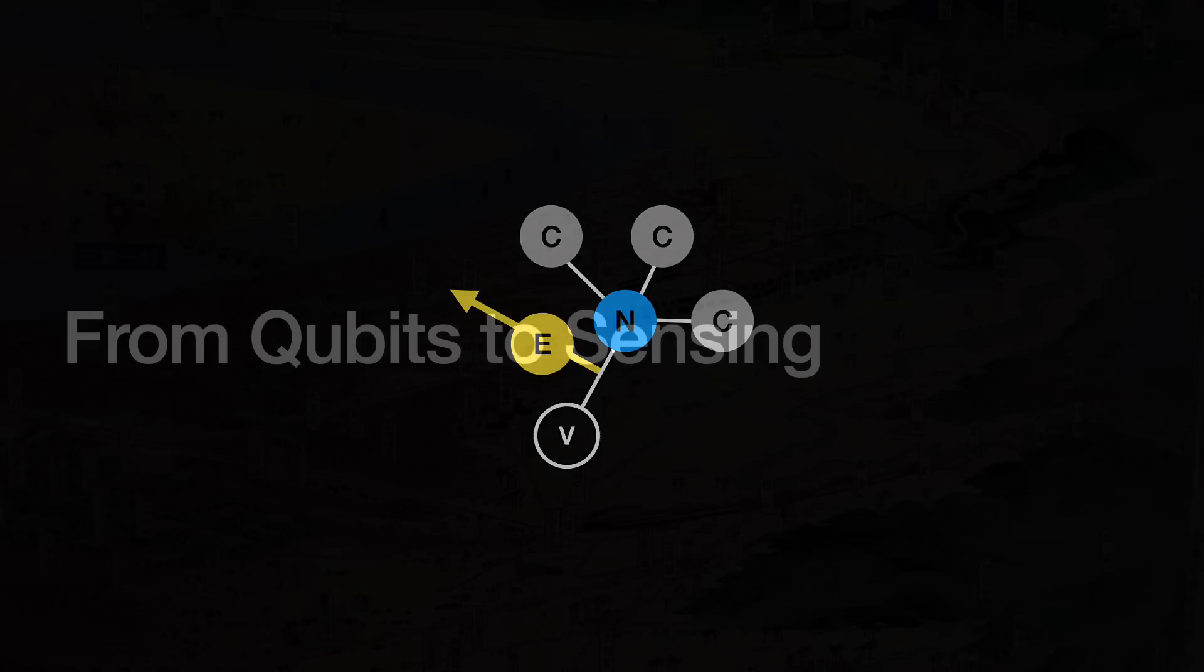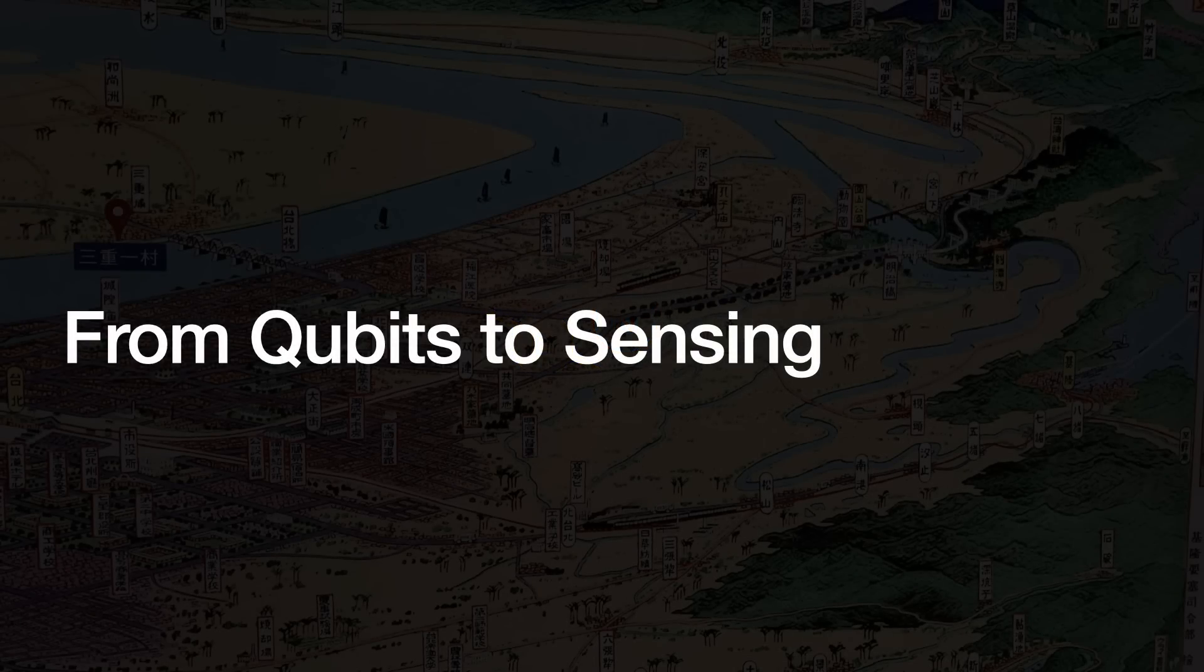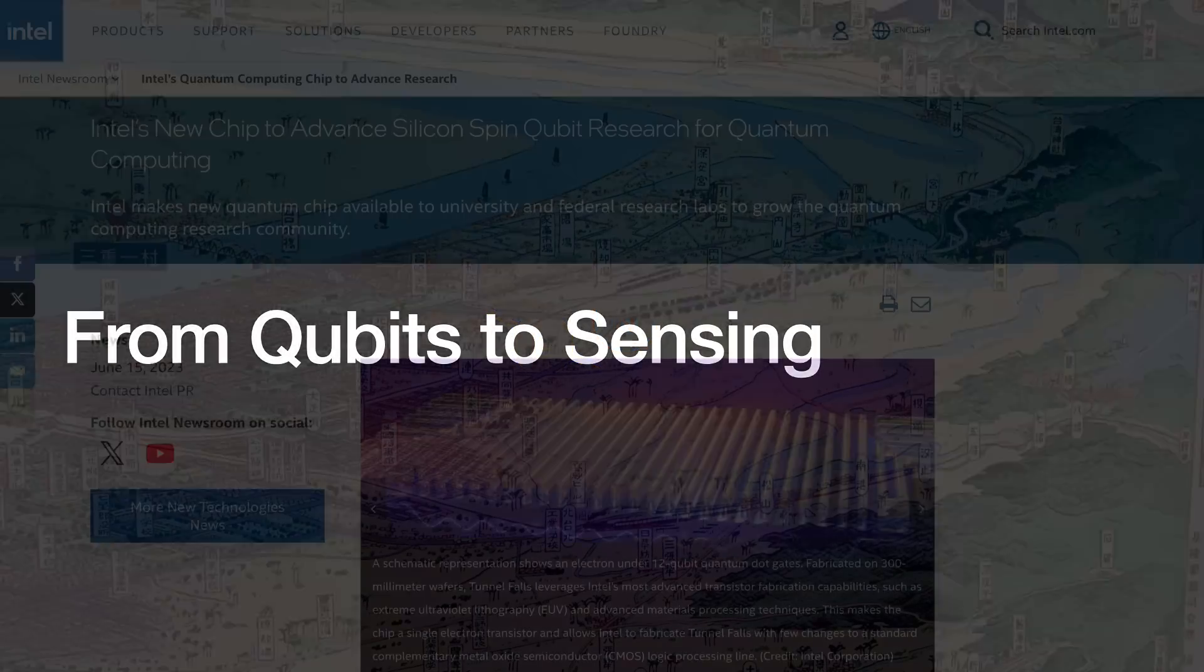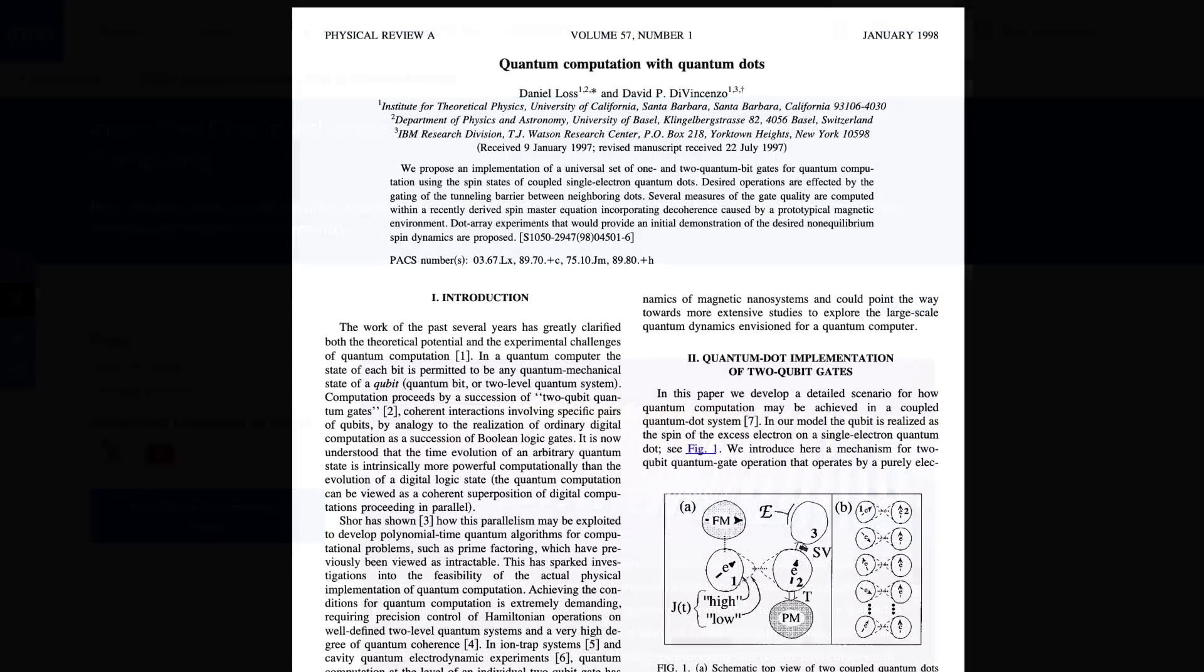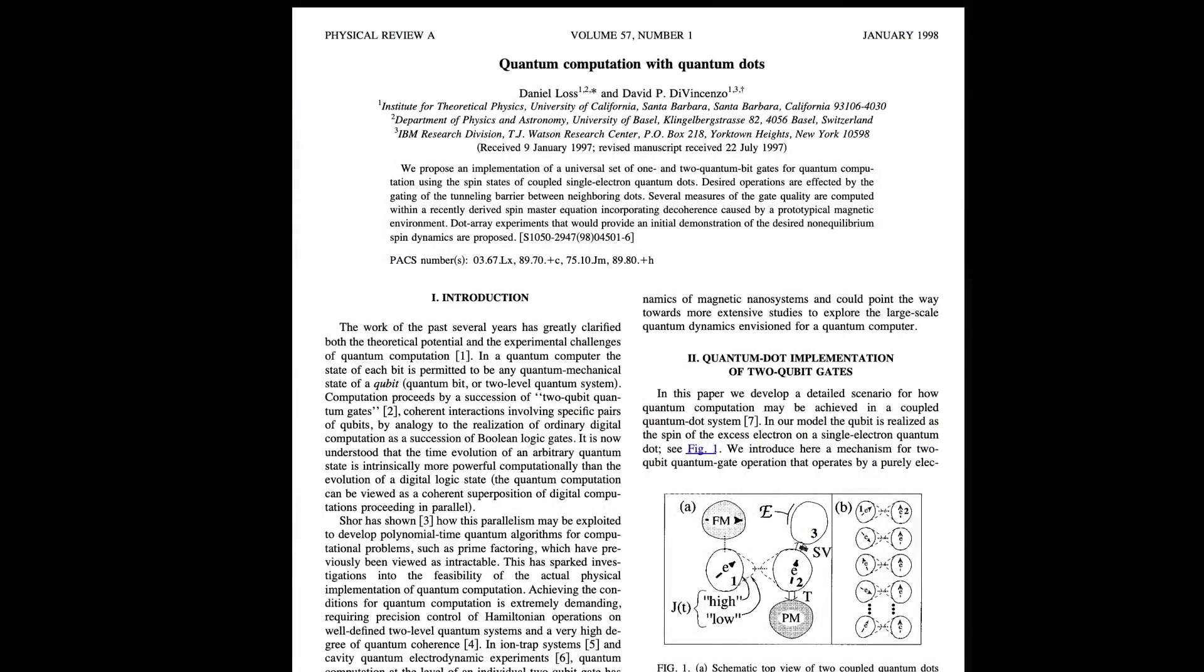Most early research focused on using diamond-based NV negative centers for compute. We can encode data into the NV negative center's state and then manipulate it like the ones and zeros of classical transistor computing, a spin qubit. There is a type of quantum computing like this. In 1998, Daniel Loss and David DiVincenzo proposed a new type of quantum computer using individual electrons suspended in quantum dots as its spin qubits. Intel's quantum computer stuff relies on spin qubits too.